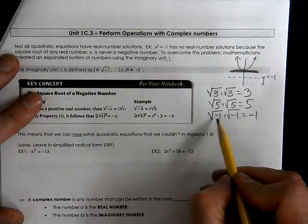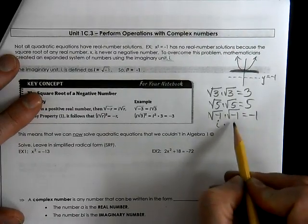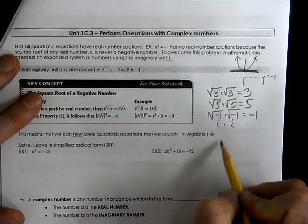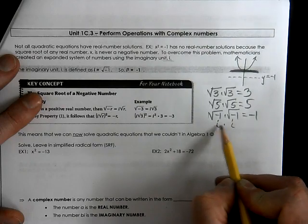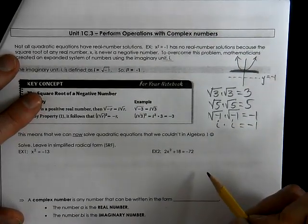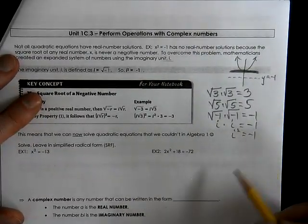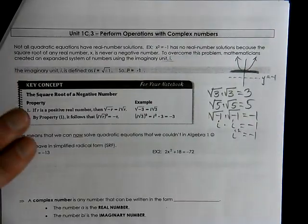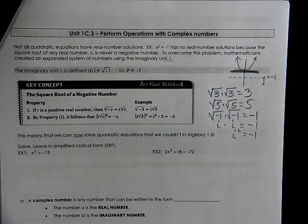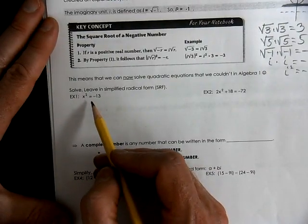So if square root of negative 1 is i, then i times i equals negative 1. i times i is just i squared, which equals negative 1. We're going to be able to use that in our future calculations. So now we're going to use that property to solve our equations.